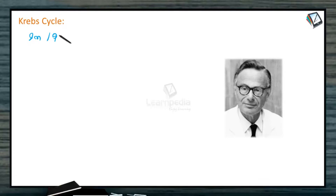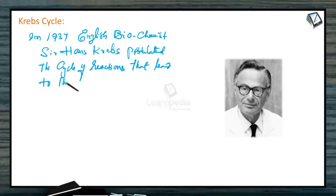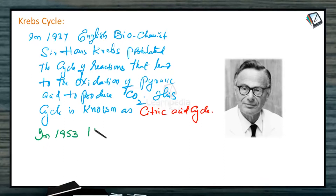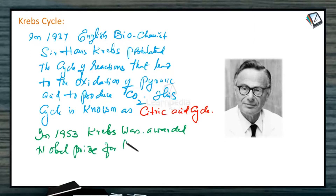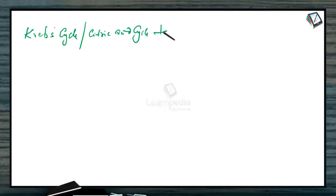In 1937, English biochemist Sir Hans Krebs postulated the cycle of reactions that lead to the oxidation of pyruvic acid to produce carbon dioxide. This cycle is known as citric acid cycle. In 1953, Krebs was awarded the Nobel Prize for this discovery, and this cycle is referred to as Krebs cycle in his honor.